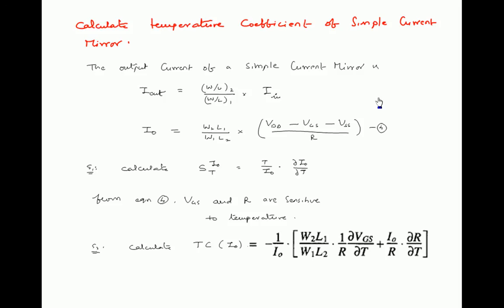We proceed with the U·V differentiation model, where U equals −VGS and V equals 1/R. Taking the differentiation and simplifying, then substituting into the temperature coefficient expression — which is 1/T times S_I0(T) — we finally get Tc of I0 equal to −1/I0 times (W2·L1)/(W1·L2) times [1/R · ∂VGS/∂T + (I0/R) · ∂R/∂T].